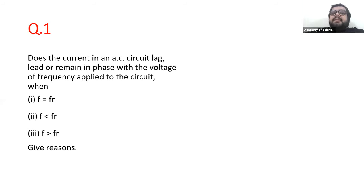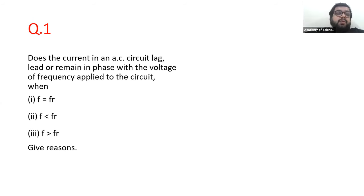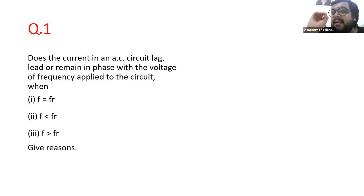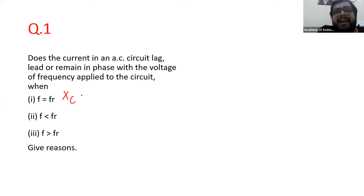Does the current in an AC circuit lag, lead, or remain in phase with the voltage when the applied frequency F is equal to the resonant frequency FR? The meaning is that the applied frequency equals the resonant frequency. When applied frequency equals resonant frequency, resonance is happening, and the only condition for resonance is that XC becomes equal to XL.